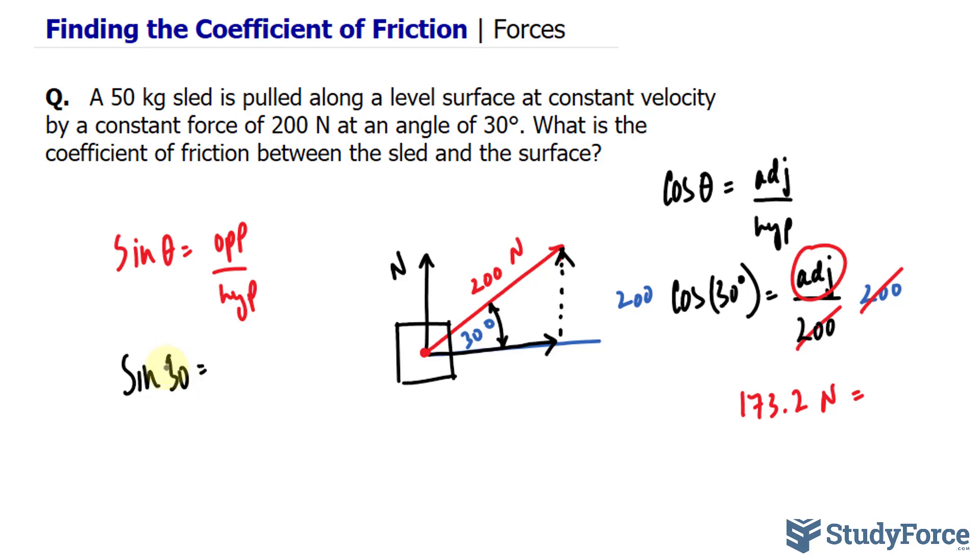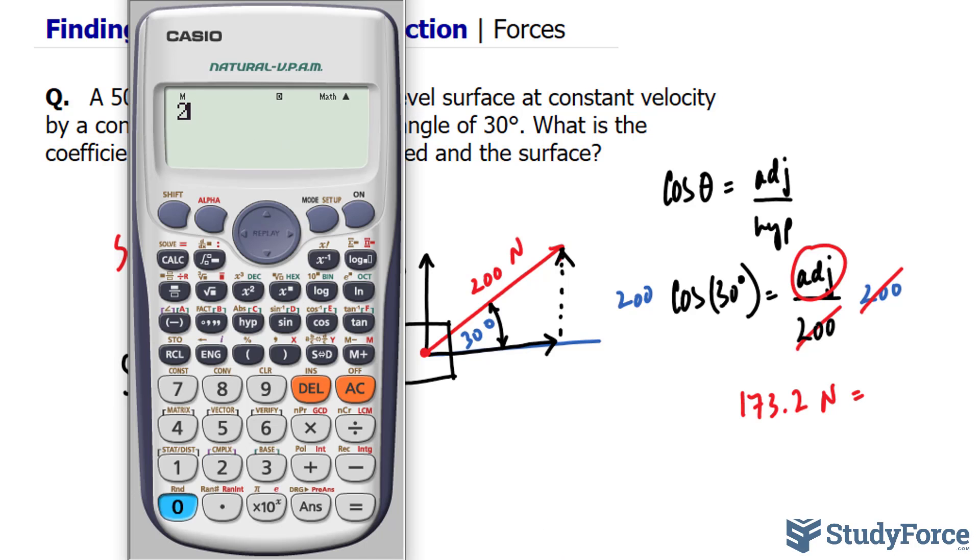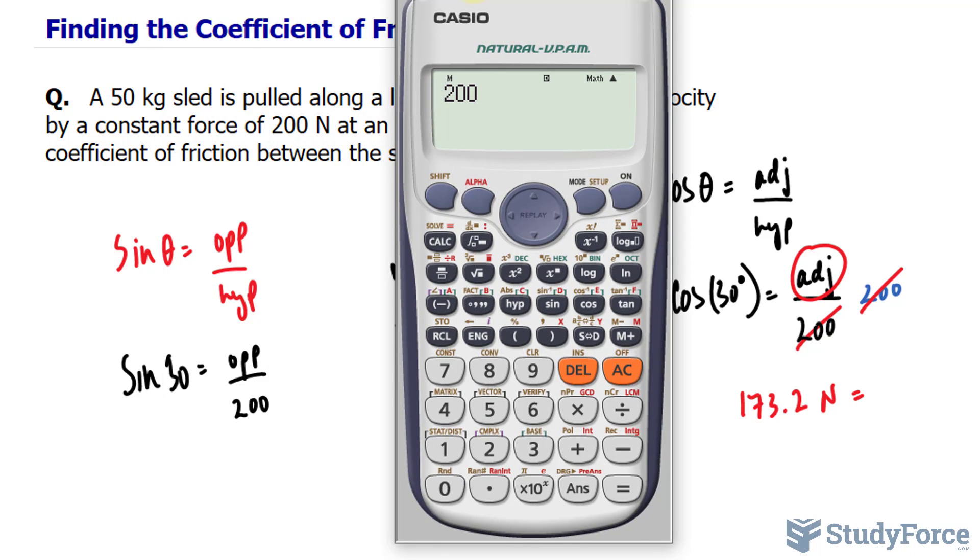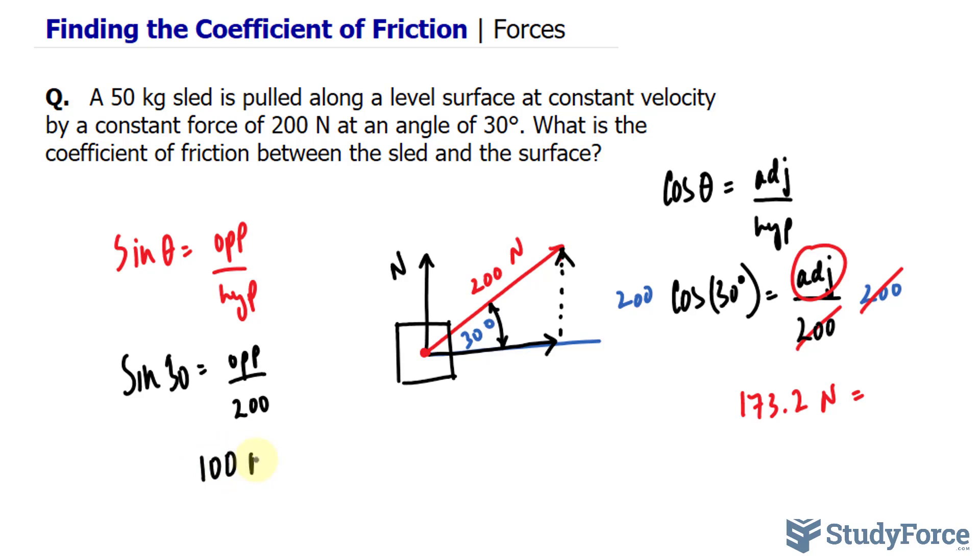Filling this in, we have sine 30 equals opposite, that normal force, over the hypotenuse of 200. Multiplying both sides by 200, let's see what we get. 200 times sine of 30, and that equals 100 newtons. So there is a vertical force of 100 newtons, and adding this vector and that vector up gives us this red one.